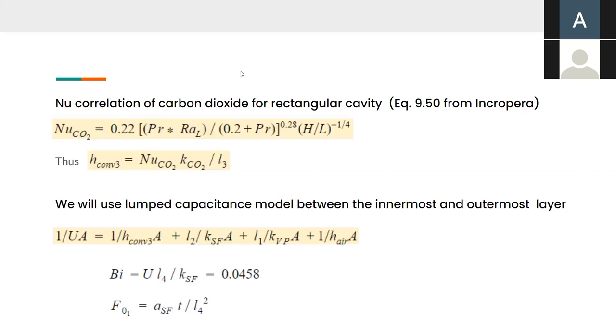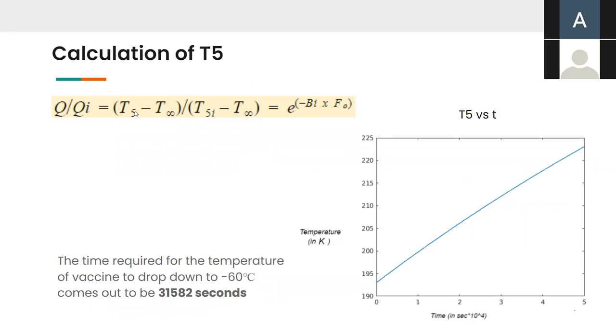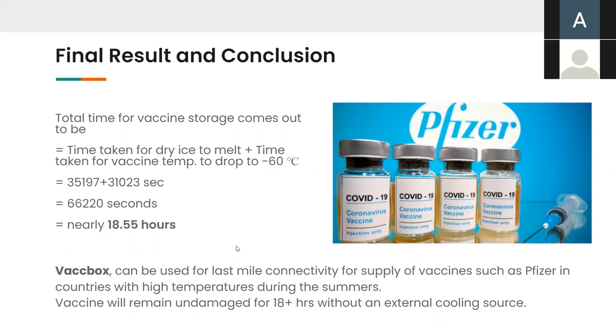So, once again, because the entire chamber of dry ice is filled with carbon dioxide, we need a new Nusselt number correlation for using that for a rectangular cavity. So, this is the Nusselt number correlation, which gives us the convective rate for that part. So, using convective rate and the other resistances of each layer, we find out the equivalent resistance, which is U, which in turn gives us the Biot number and the Fourier number using tables. So, we can use these two values in the final equation, which is for calculation of T5 with respect to time. So, we get this graph, which is the change of temperature of vaccine with respect to time. So, the graph shows us that the temperature changes from around minus 80 degrees Celsius to minus 60 degrees Celsius in around 31,000 seconds, which is the second part of our answer. So, we can finally conclude that the total time required for the vaccine to reduce from minus 80 to minus 60, using the coolant as dry ice is nearly 18.55 hours.